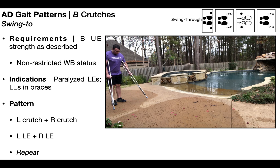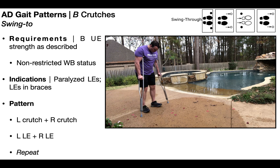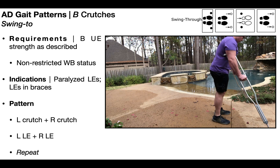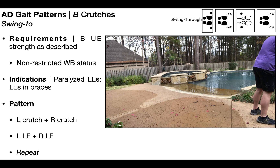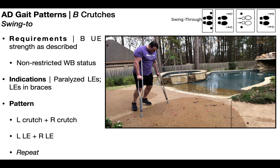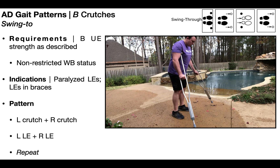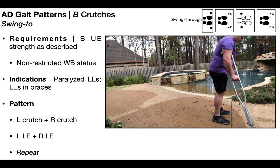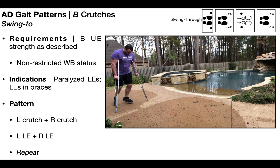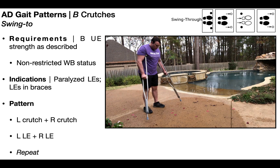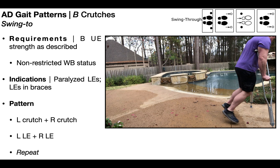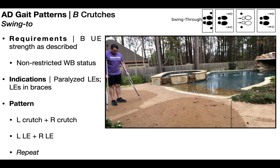Now let's take a look at the swing-to pattern. The first step is advancing both assistive devices at the same time — so first the left and right axillary crutches. Then, after you advance the assistive devices, you advance both legs at the same time. So basically: both crutches, both legs, both crutches, both legs, and repeat. This is termed the swing-to pattern because the legs advance just to the level of the crutches or the assistive devices.